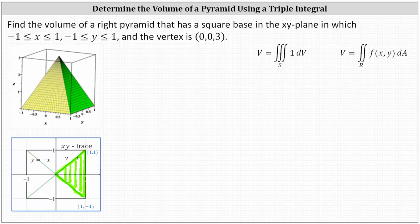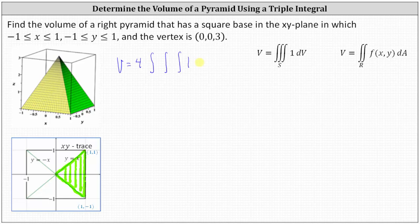Let's go ahead and begin to set this up. We're going to have the volume V equals four times the triple integral of one, and we'll let dV equal dz dy dx.